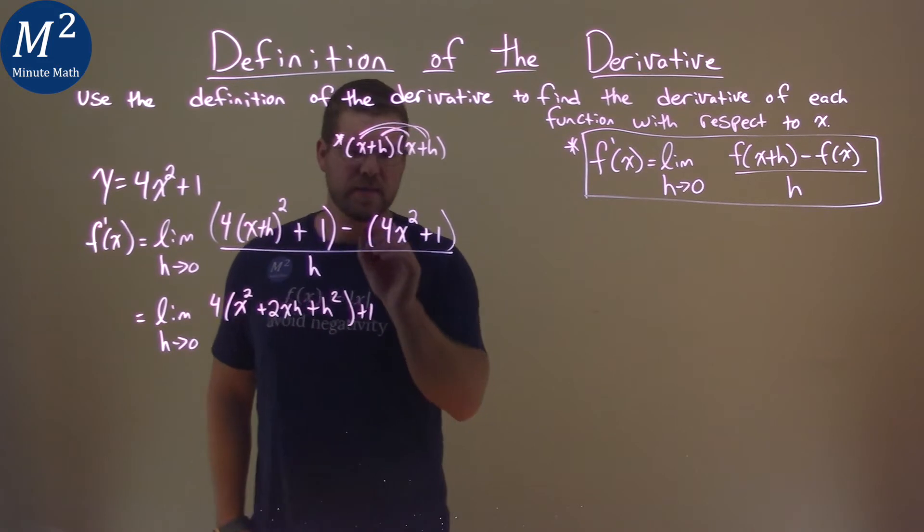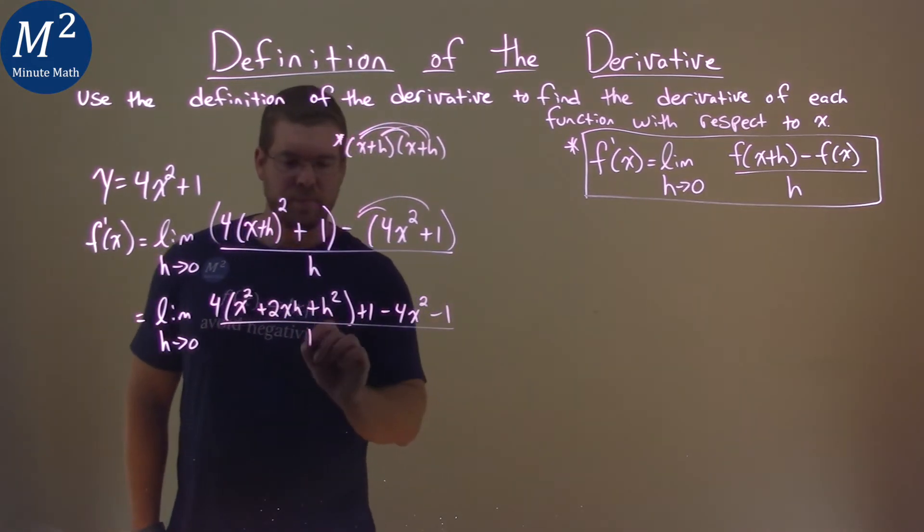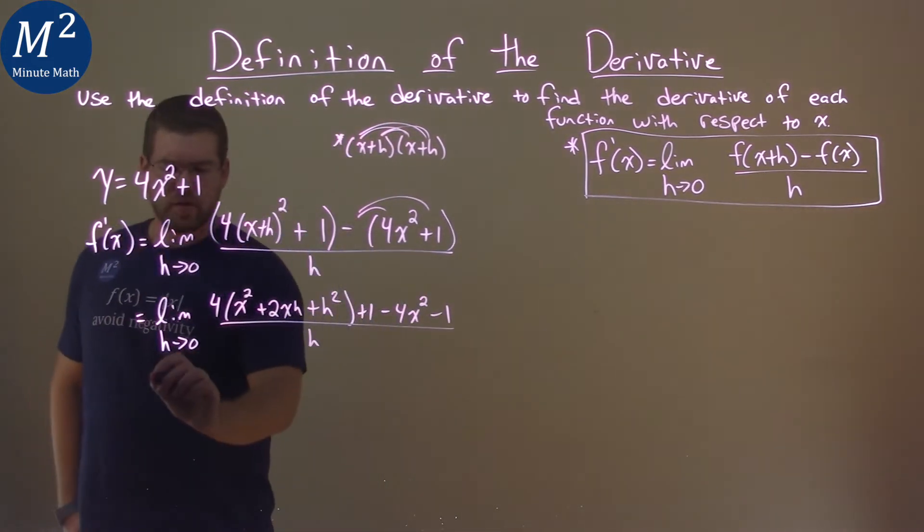Now we're subtracting, distribute the minus sign, a minus 4x squared and then a minus 1. All that is over h again. Let's keep this gravy train going.